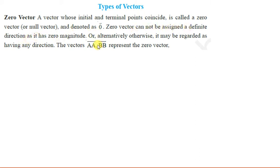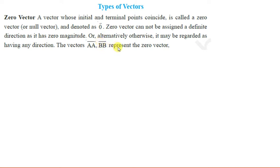Since its magnitude is zero, zero vector ka koi definite direction nahi hai. You can say that it is having any direction — koi particular direction nahi hai. So if we write vector AA, or vector BB, or vector CC, then they represent the zero vector.